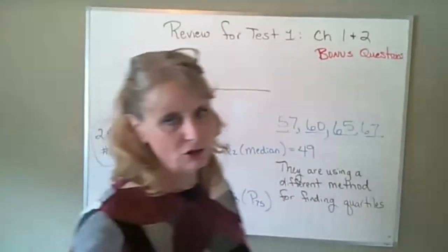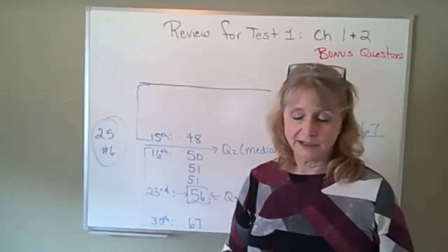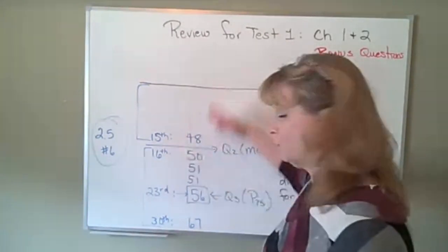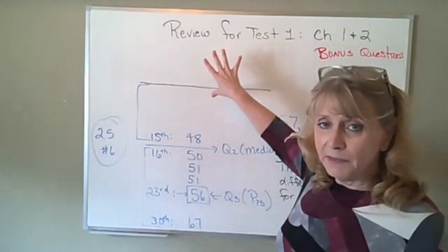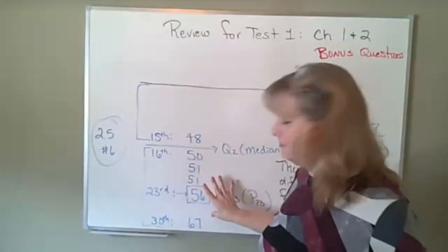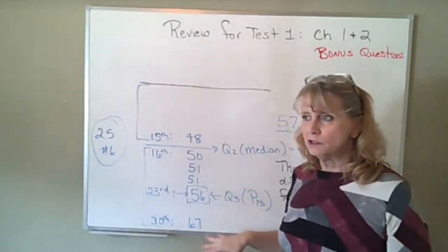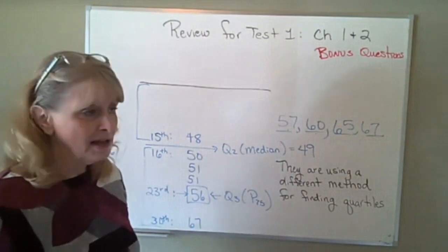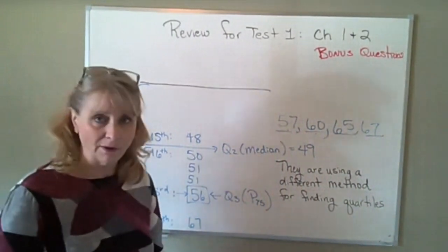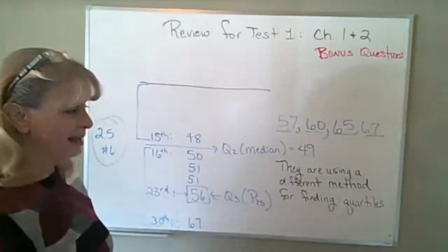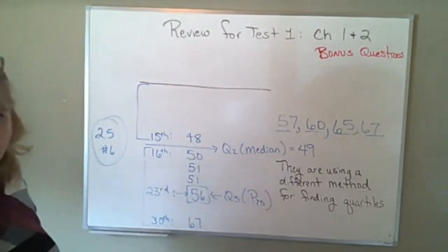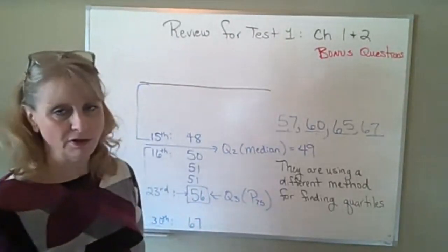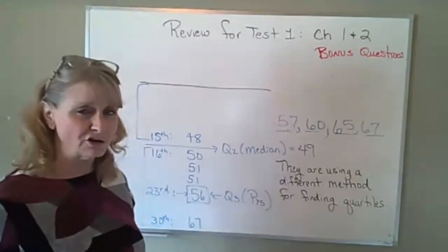So there's actually two methods for finding percentiles, or quartiles in particular. One method is using a formula — that's the method they were trying to use. The other method is what I showed you, where you find the median and then do the middle of the top half or the bottom half to get your third quartile. That formula, if you look at 'view an example' or 'help me solve it,' is another way to find quartiles, but it's not the way it shows in the textbook, and it's also not the way my graphing calculator does it.